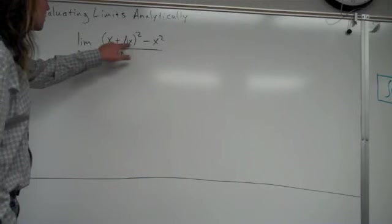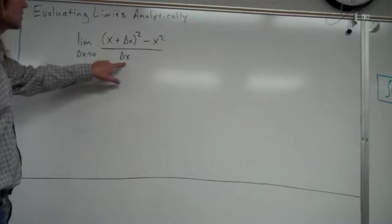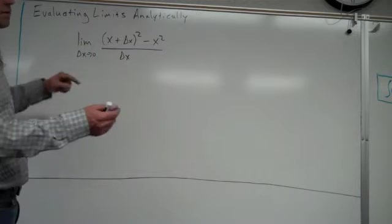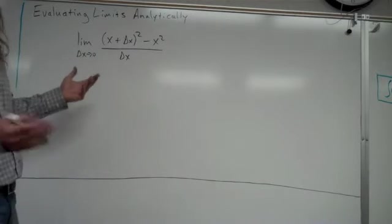Plug in zero. Plug zero into delta x there. Plug zero into delta x there. And, you know, it's clearly zero on the bottom. On the top, if you simplify it, you get x squared minus x squared, which is going to be zero. So, zero over zero.